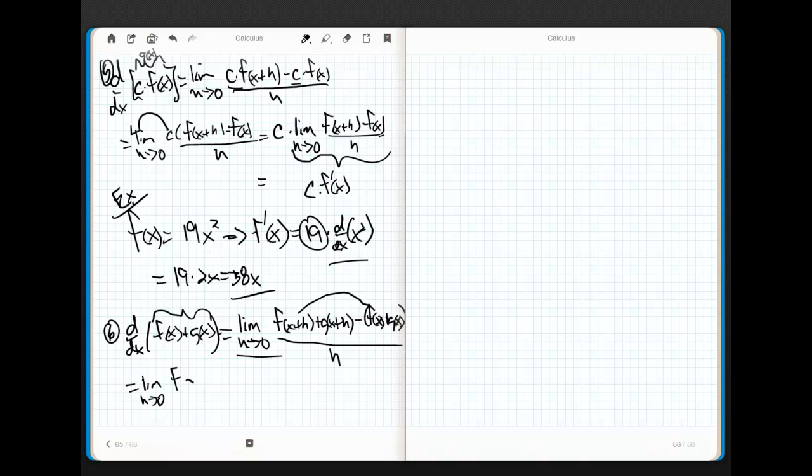So, I end up with the limit as h goes to zero. I'm going to collect these two guys. And I'll get f of x plus h. Minus f of x, right?